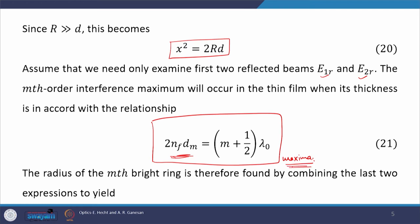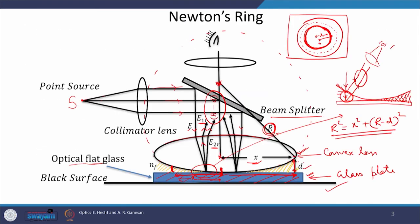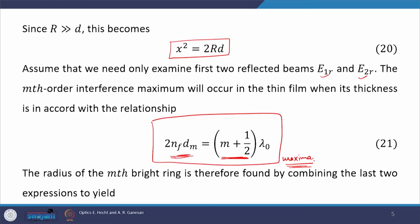The condition of maxima should be an integral multiple of lambda, but it is not — there is something extra. This is because the first reflection is from denser medium to rarer medium (glass to air), while the second reflection is from rarer medium to denser medium. An extra phase difference of π appears due to this, and taking it into account, the condition of minima gets converted into the condition of maxima, which appears in equation 21.